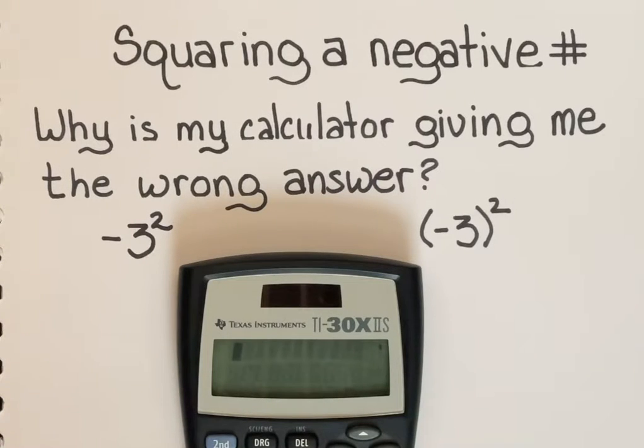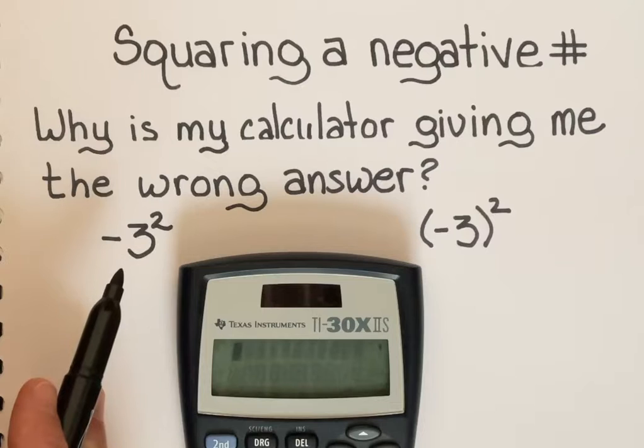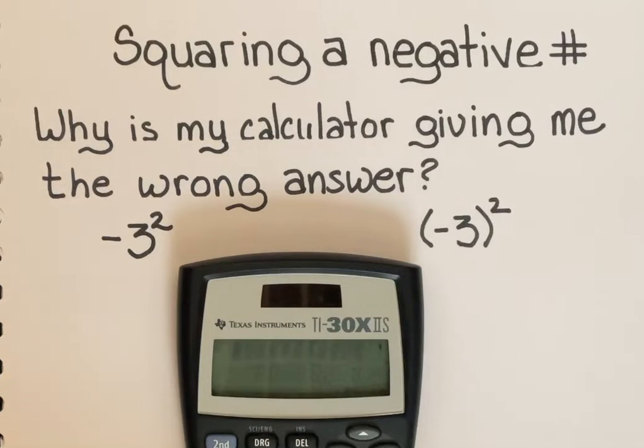Squaring a negative number on a calculator is one of the most common mistakes. If you enter negative 3 squared into the calculator thinking that you're asking the calculator to take negative 3 times negative 3, you'll be surprised when I hit enter and the calculator gives me negative 9.